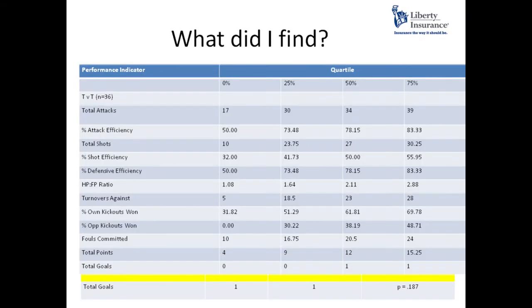These are the 12 performance indicators. You can ignore the last column. The first column on the left is the median values of the top teams — so on average what the top teams got in their games when they played bottom teams. The second column is what bottom teams scored when they played top teams. The ones highlighted in yellow are all significantly different. You can see that the top teams got more attacks, they take significantly more shots, and even from the shots they take, they score more often. Those are the 8 that were most significant.